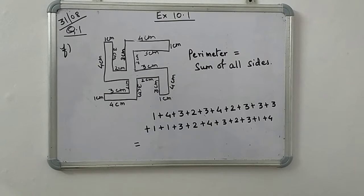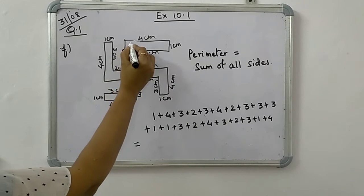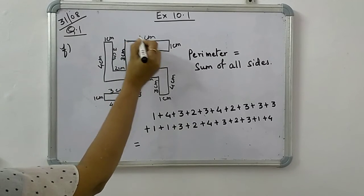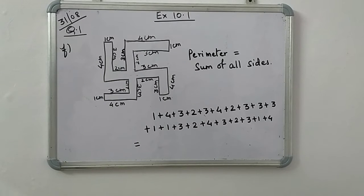Now you know perimeter is equal to sum of all sides, so we'll start with F. You can see this is the shape of like swastik shape and so many dimensions are written here, so just add all the dimensions.